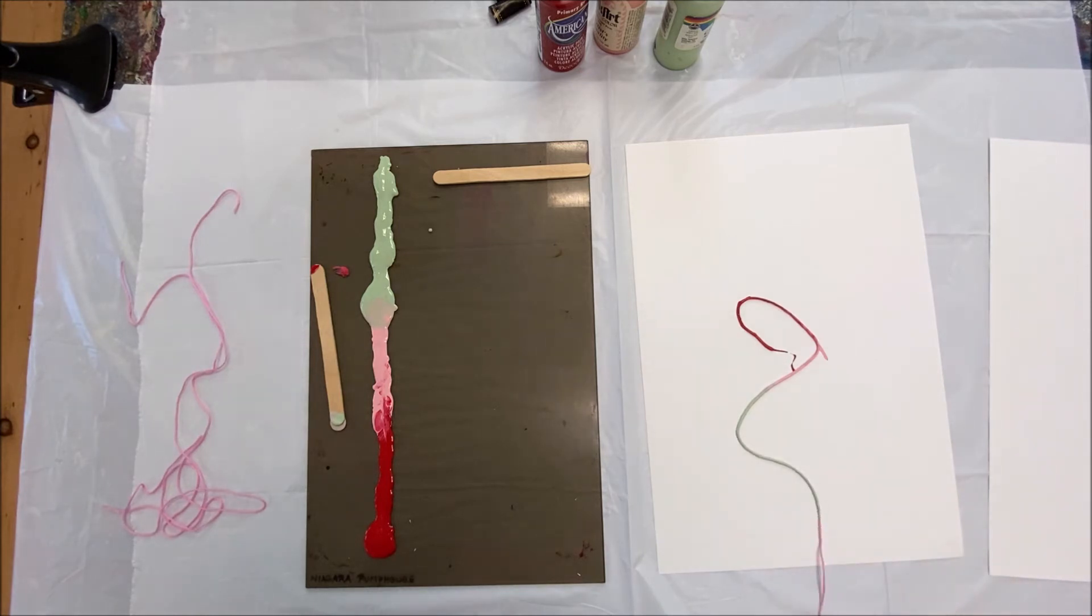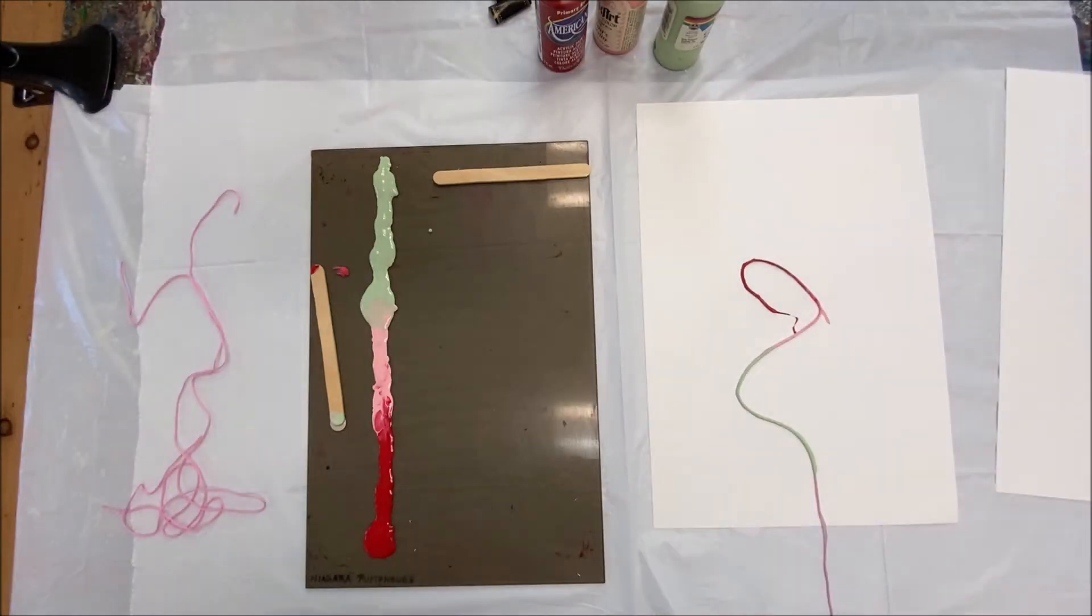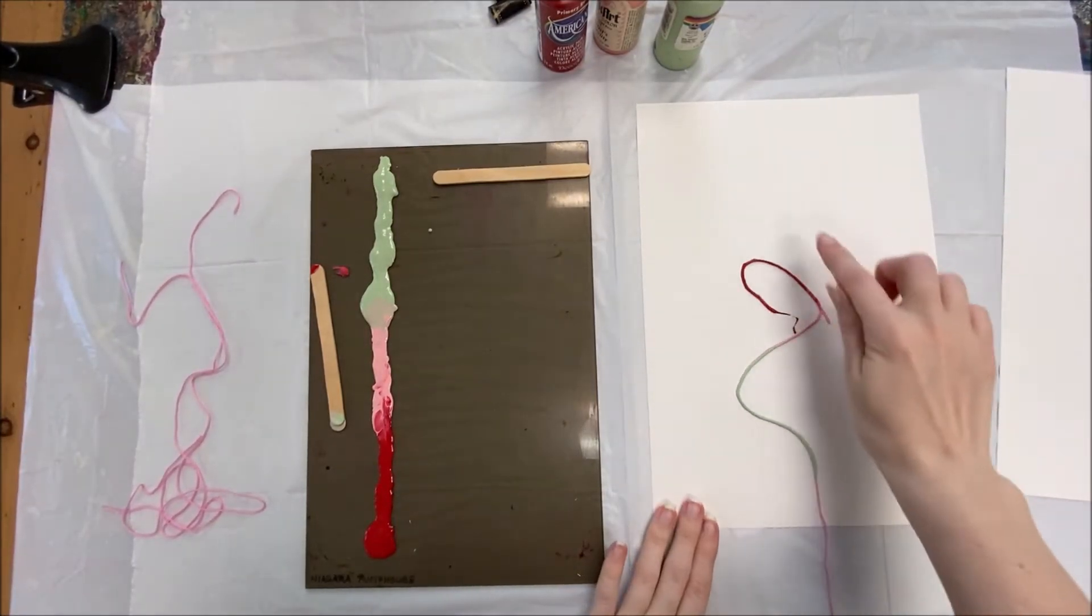Make sure that part of the string that you want to grab is hanging off the edge of the paper. The loops in the string are going to make the shape of the flower petals.